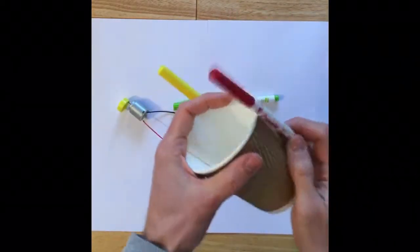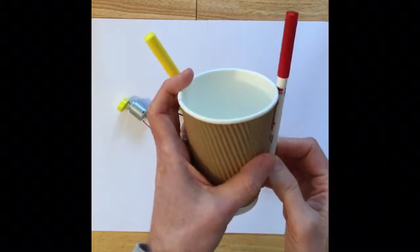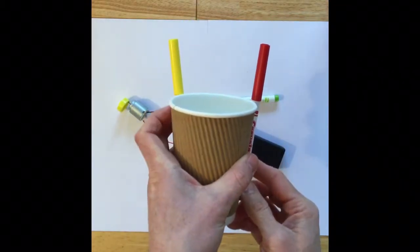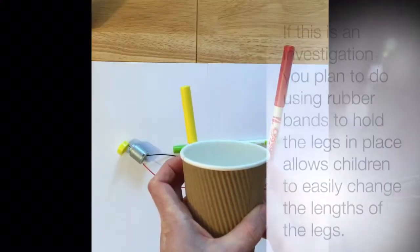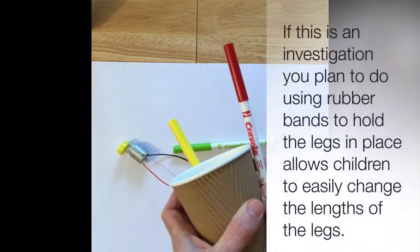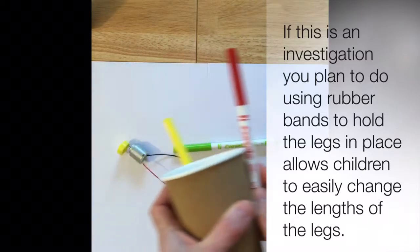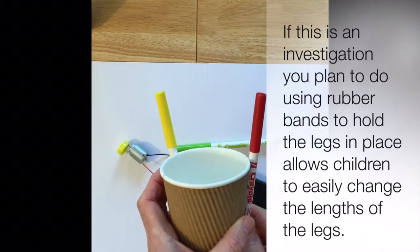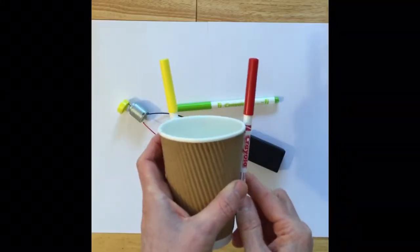An interesting thing that you could discuss with your children is what would happen if you changed the size of the legs, the length of the legs. What would happen if you had one leg this length and one leg this length? Would that tilt to the side? How would that change its movement? That's just an interesting question to ask them and maybe even an investigation that you can do.